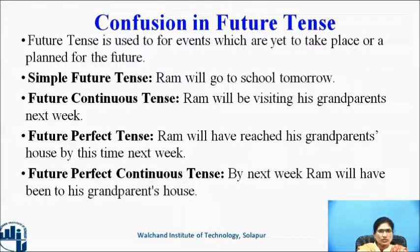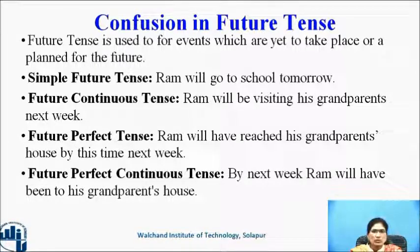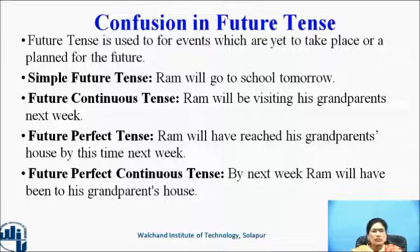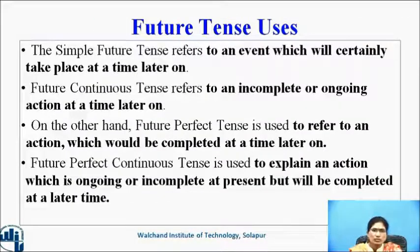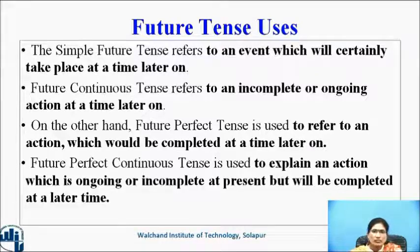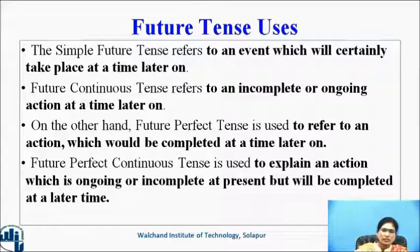Confusion in future tense. Future tense is used for events which are yet to take place or are planned for the future. Simple future tense — Ram will go to school tomorrow. Future continuous tense — Ram will be visiting his grandparents next week. Future perfect tense — Ram will have reached his grandparents' house by this time next week. Simple future tense is used for certain actions taking place at a certain time. Future continuous tense refers to incomplete or ongoing actions at a later time. Future perfect tense refers to an action which would be completed at a later time. Future perfect continuous tense is used to explain an action which is ongoing at present but will be completed at a later time.